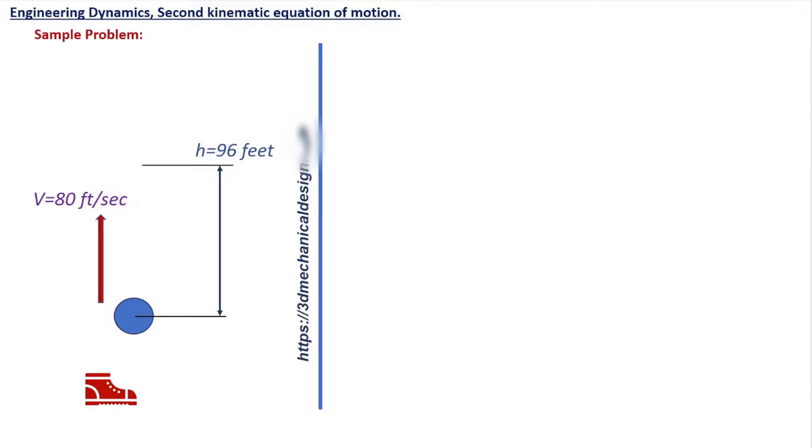Sample problem. A ball is thrown upwards with an initial velocity of 80 foot per second. After which the ball will be at a height of 96 foot from the ground. Acceleration due to gravity, G equals 32 foot per second squared.